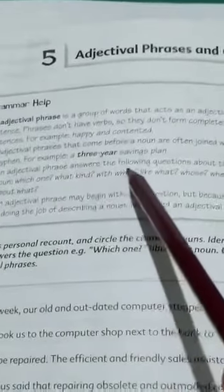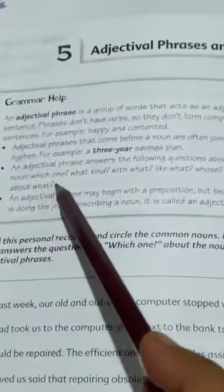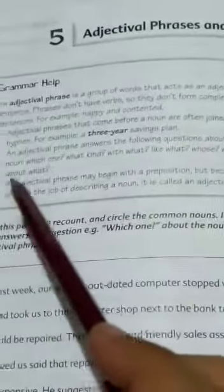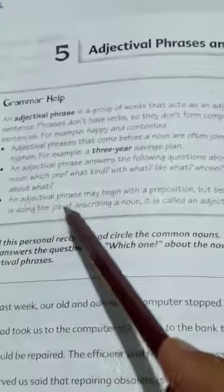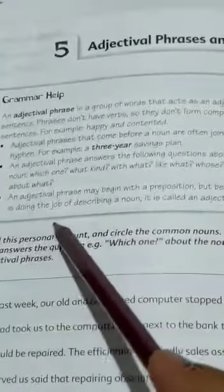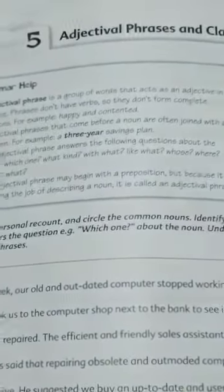An adjectival phrase answers the following questions about the noun: Which one? What kind? With what? Like what? Whose? Where? About what? An adjectival phrase may begin with a preposition but because it is doing the job of describing a noun it is called an adjectival phrase.